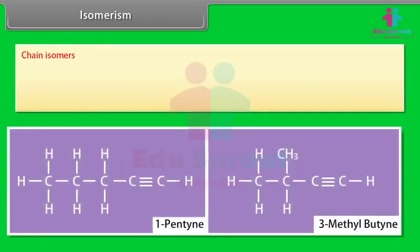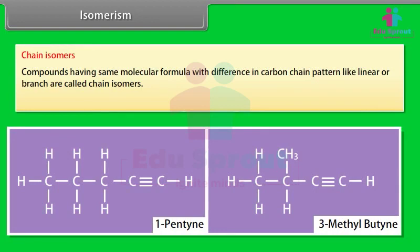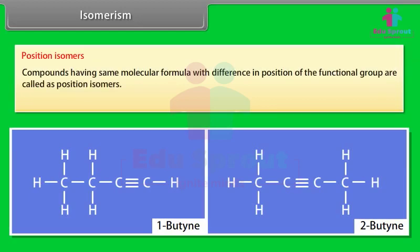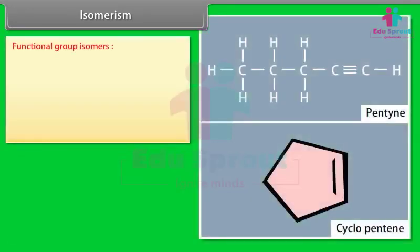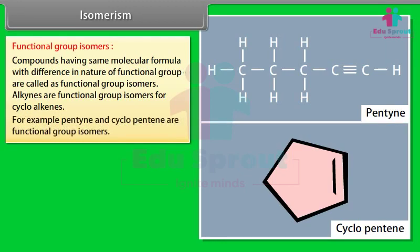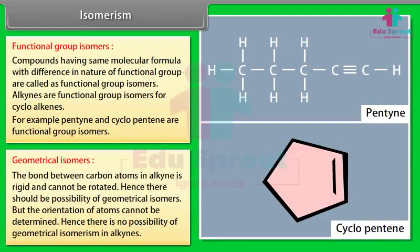Isomerism in Alkynes — Chain Isomers: compounds having the same molecular formula but different carbon chain patterns (linear or branched) are called chain isomers. For example, 1-pentyne is a chain isomer of 3-methyl-butyne. Position Isomers: compounds with the same molecular formula but different positions of the functional group are called position isomers; 1-butyne and 2-butyne are position isomers. Functional Group Isomers: alkynes are functional group isomers of cycloalkenes; for example, pentyne and cyclopentene. Geometrical isomerism does not occur in alkynes because the orientation of atoms in the linear triple bond cannot produce cis-trans arrangements.